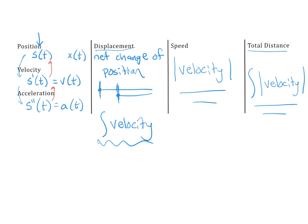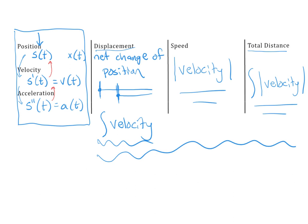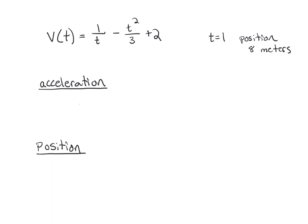I'm going to do two examples focusing on this first part. In our practice we will definitely bring these up again as we review all these concepts. Here's our first example: we have a velocity function and also the information that at time one second the position is eight meters. Can we start with velocity and find both the acceleration function and the position function? To go to acceleration we take a derivative; to go to position we go backwards using an integral.